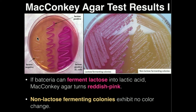Over here we don't see any red or hot pink, so therefore this bacteria over here is not able to ferment lactose into lactic acid. Over here we see a labeled figure — again we'll look at it here on the right side — these are non-lactose fermenting colonies. That means these bacteria over here on the right side of this MacConkey agar do not possess the ability to ferment lactose into lactic acid. However, over here on the left side of the MacConkey agar, these are lactose fermenting colonies, meaning these actually are able to ferment lactose into lactic acid.